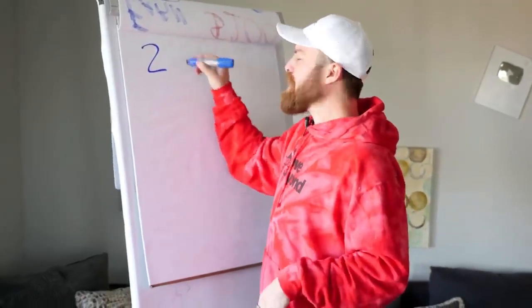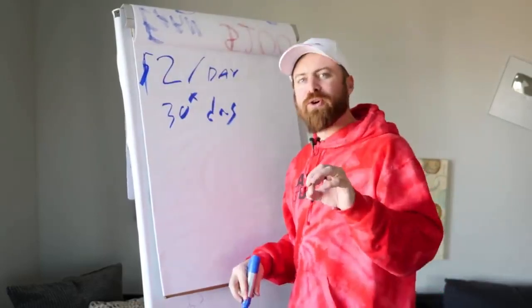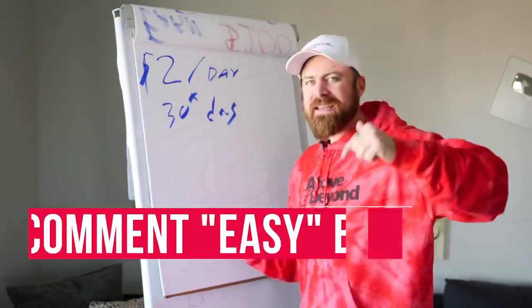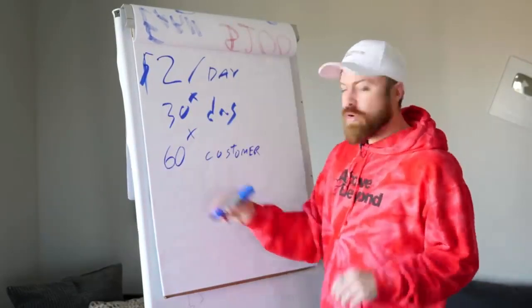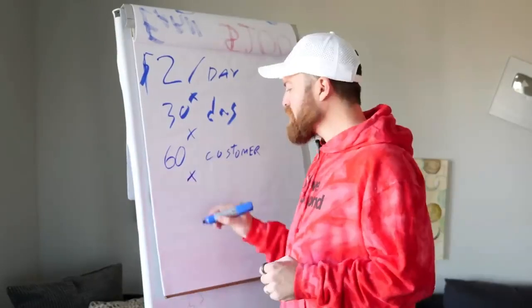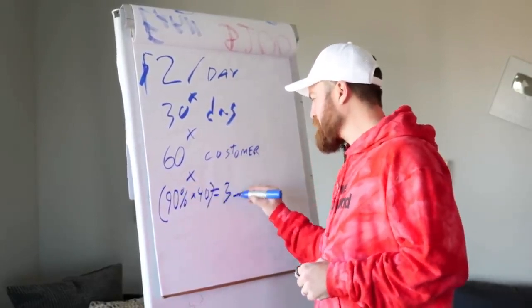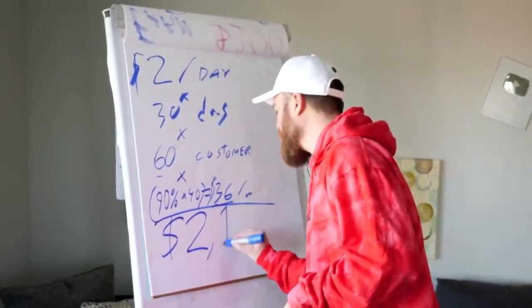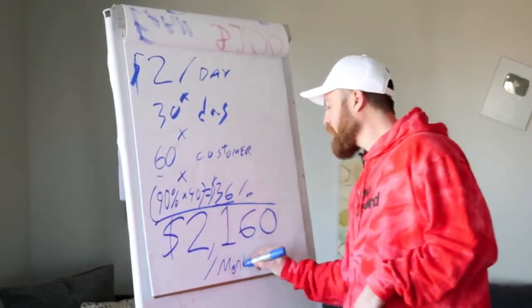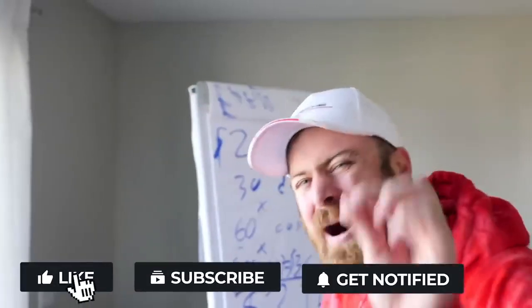Imagine if you just got 2 people every single day to spend $1. If you got 2 people every single day, how much recurring revenue would you have? Let's do the math: 2 people a day times 30 days is 60 customers. The recurring revenue is 90% of $40, which is $36. So you have 60 customers times $36 a month — that leaves you with $2,160 in monthly recurring revenue. If you can get 2 people to spend $1 every day, you will be getting over $2,000 a month in recurring revenue.